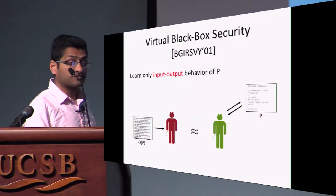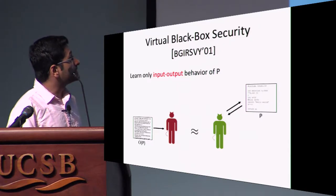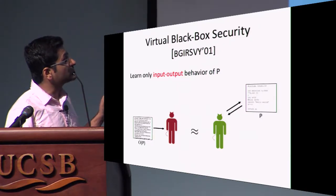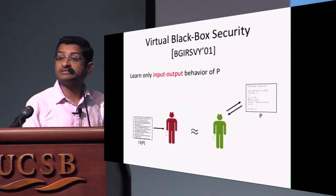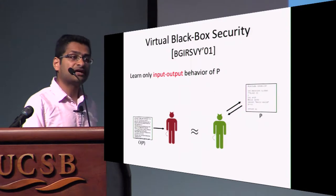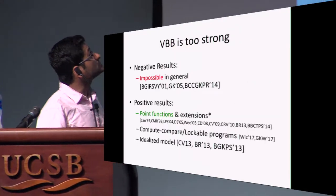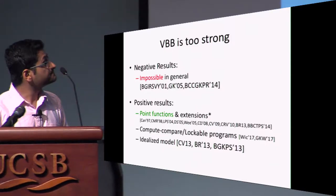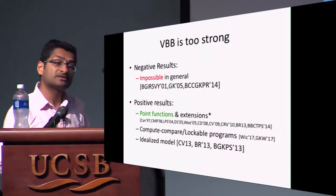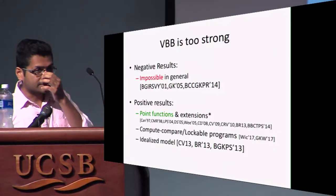In particular, if I give the obfuscated program to an adversary, then whatever he could learn from this obfuscated version, he could learn the same things from an oracle that implements the same functionality. This is a very natural notion that Barak et al. defined, but unfortunately this turns out to be a bit too strong, and there are impossibility results showing that this strong notion cannot be realized in general.